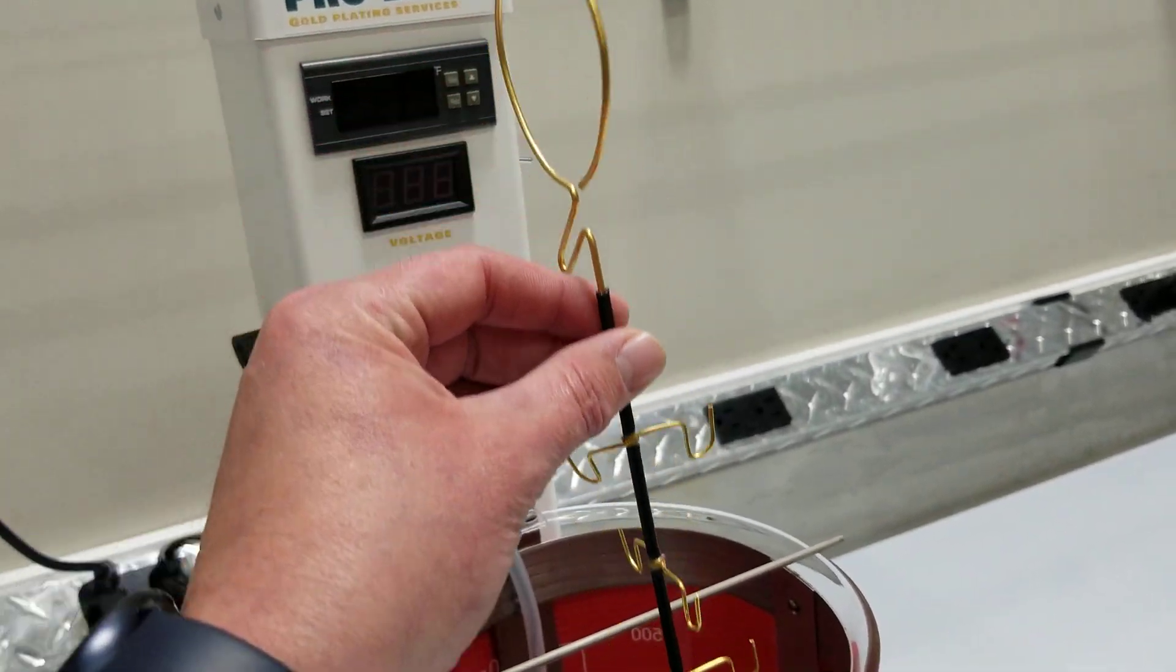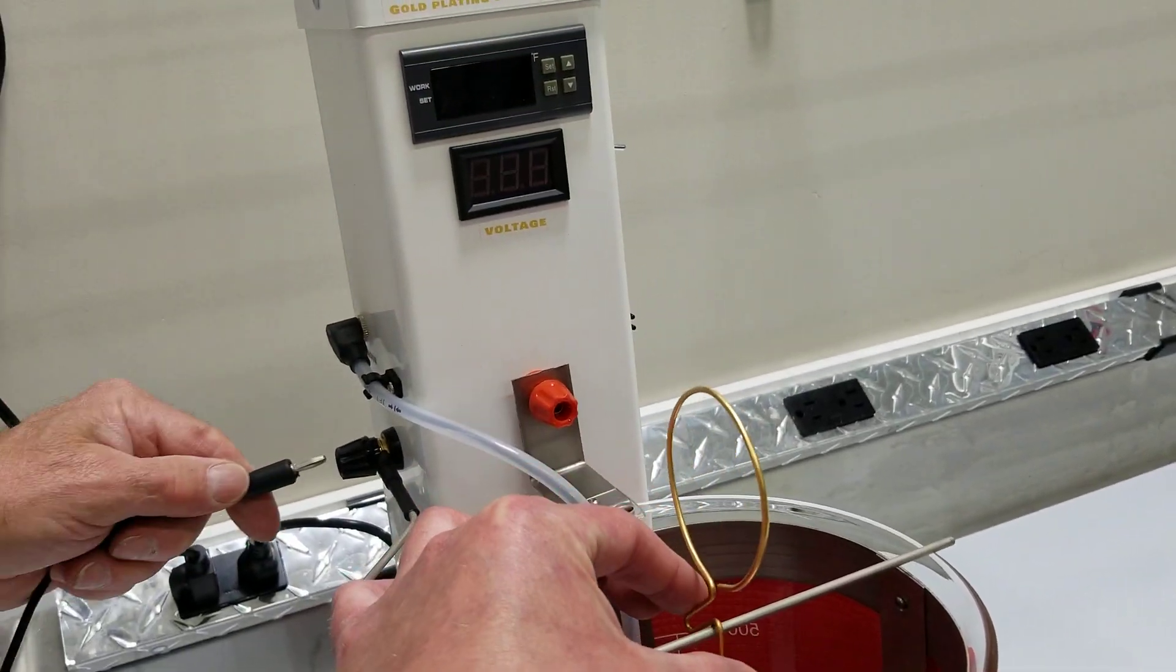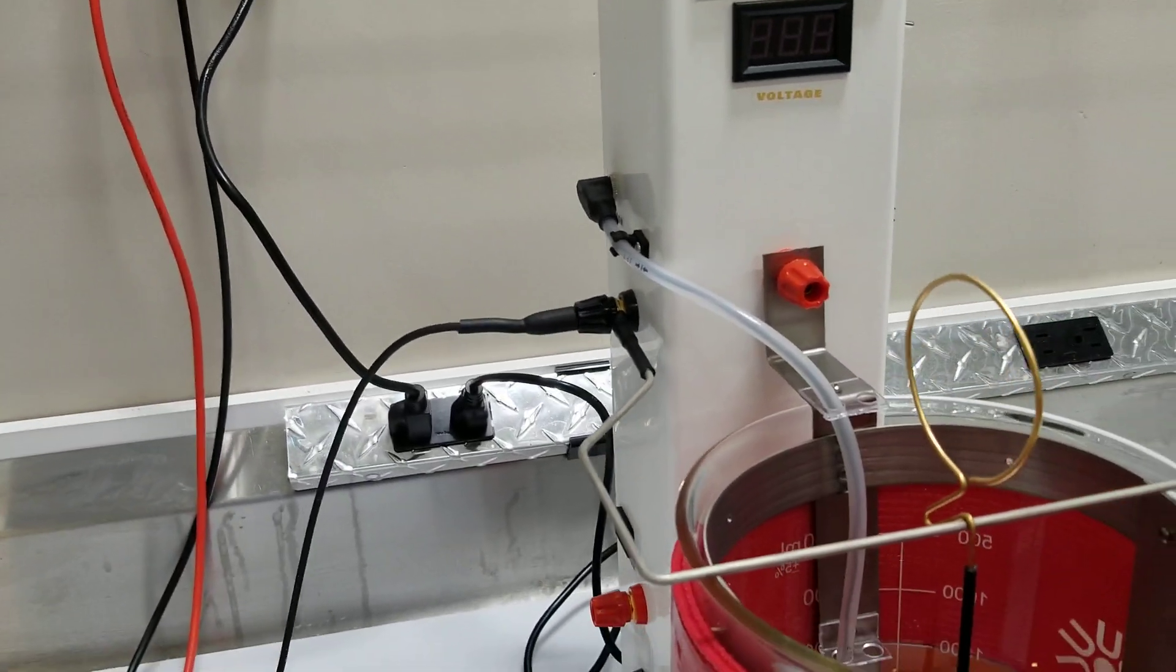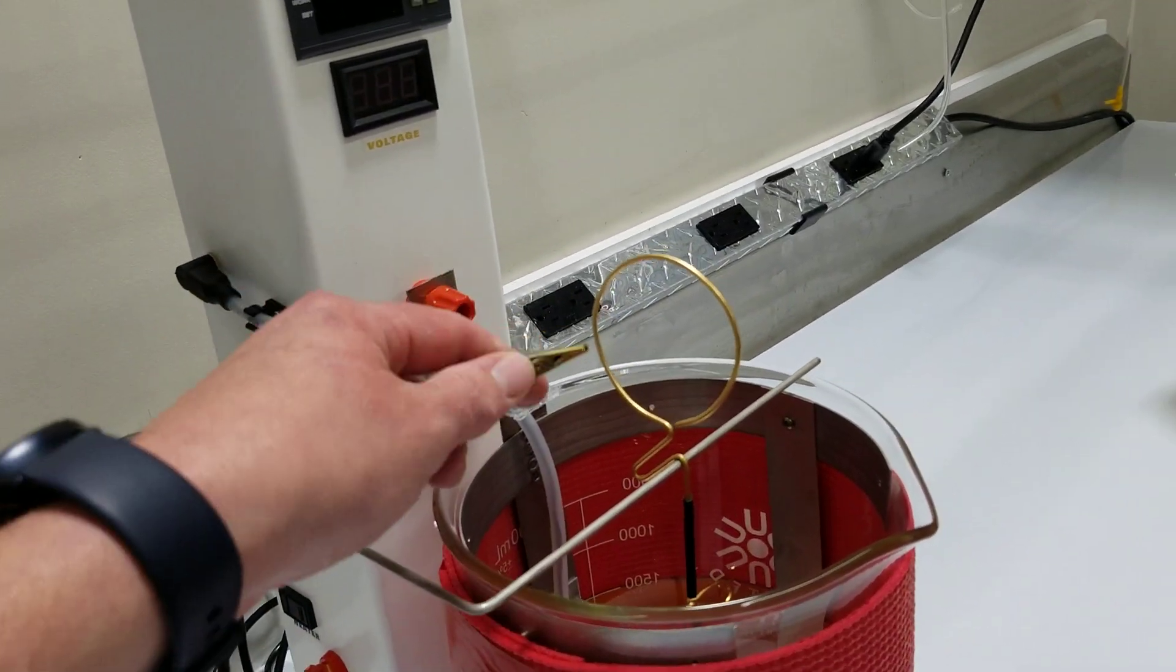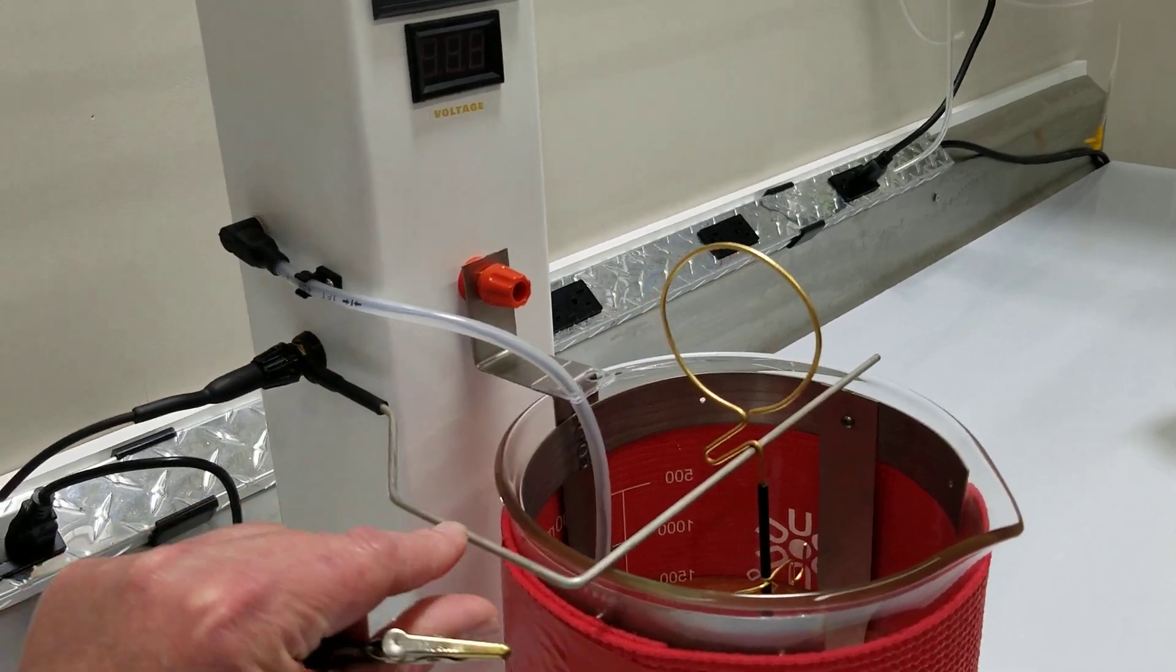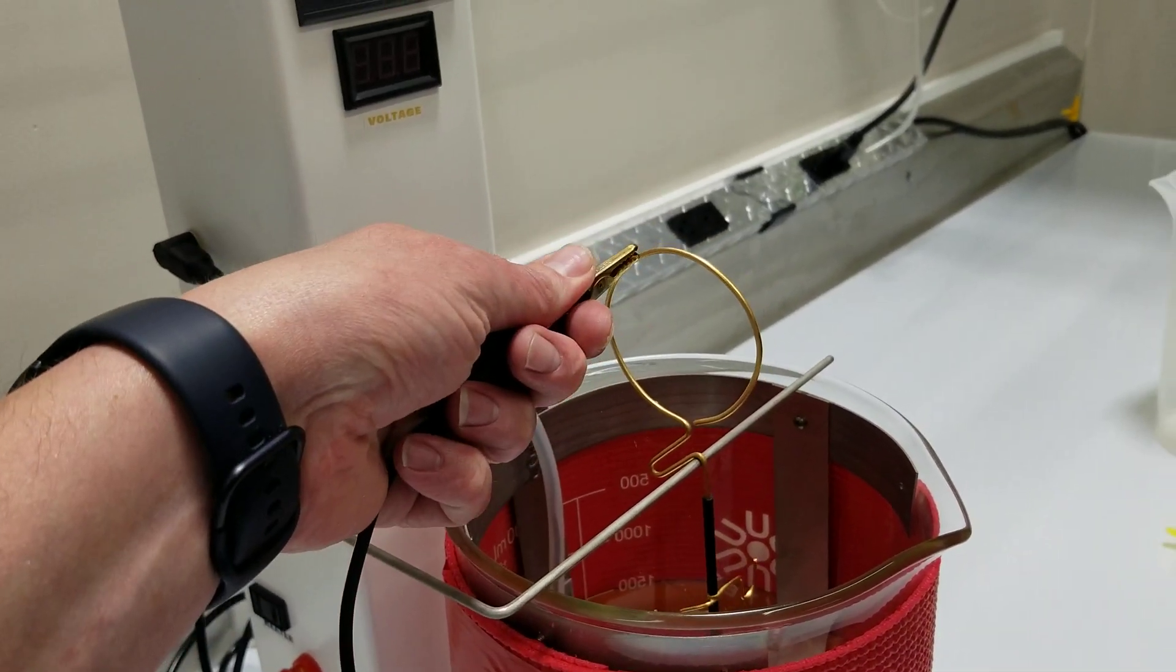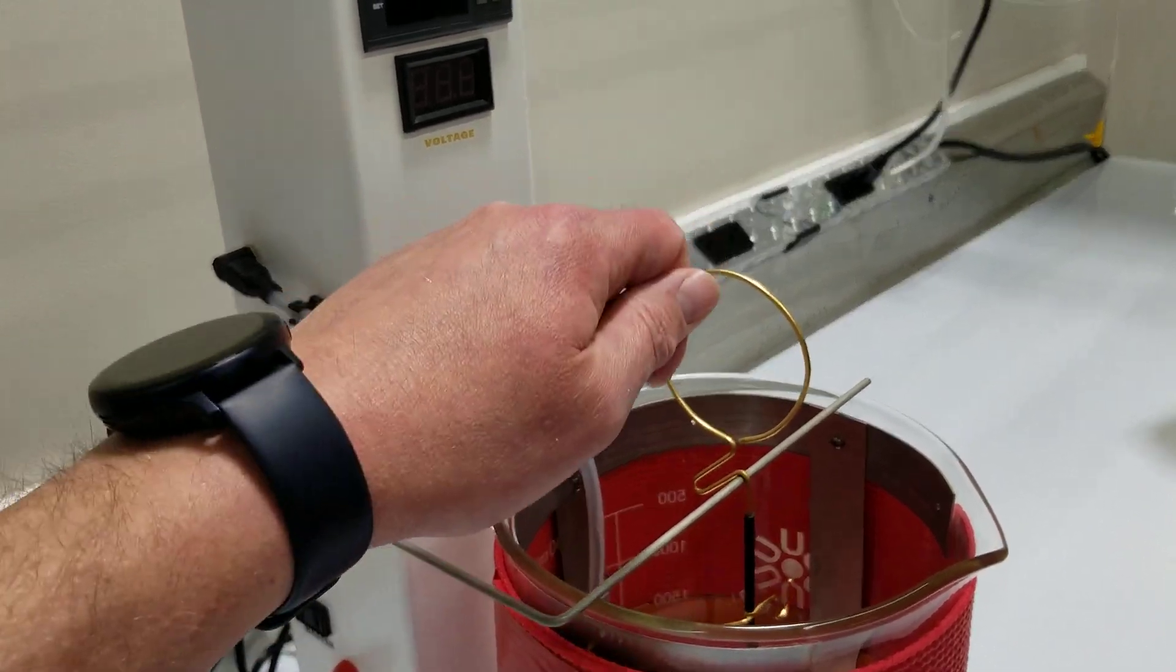The rack then just hangs onto the bus bar here when you go to use it. Here we have a common lead wire. If you wanted to, you can pivot the bus bar up out of the way, clip your common lead to the rack, and just hold it by hand as well.